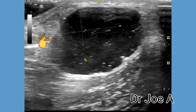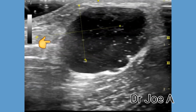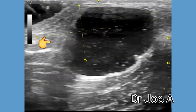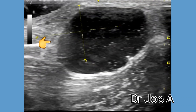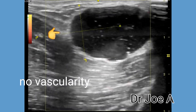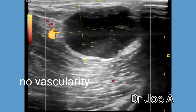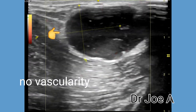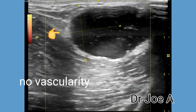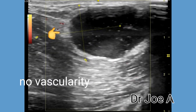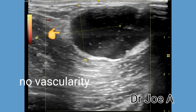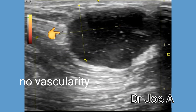An MRI scan can be advised in this case to confirm the diagnosis of a ganglion cyst. Sometimes a ganglion cyst may be misdiagnosed as lateral epicondylitis of the elbow.